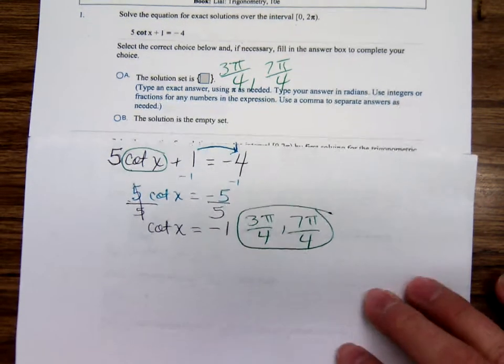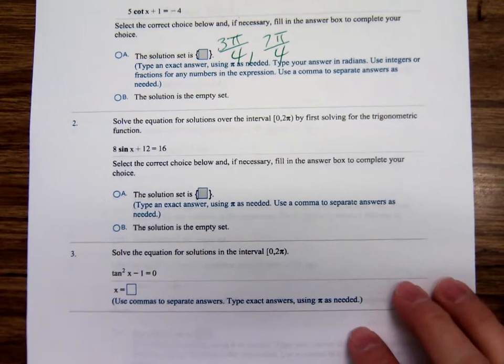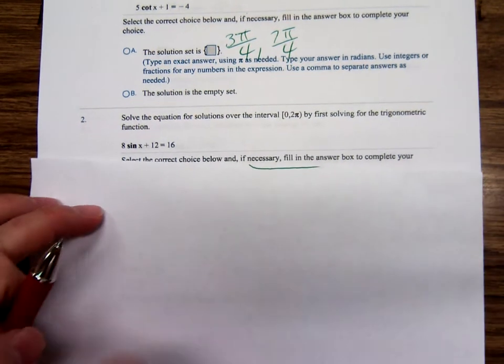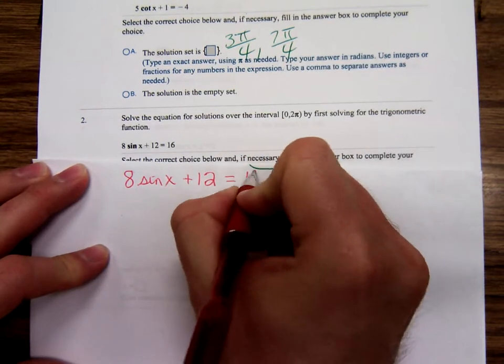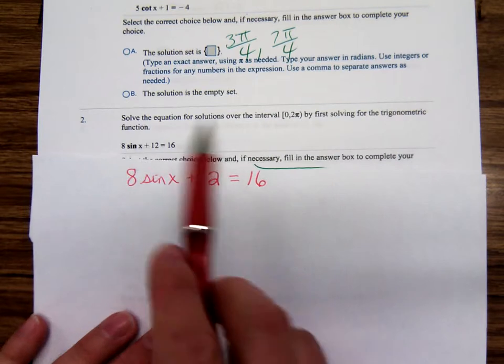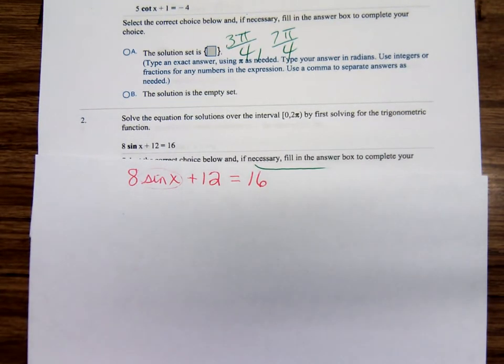Number 2: 8 sine x plus 12 equals 16. This one here, the instructions help you out. It says solve the equation for solutions over the interval 0 to 2π by first solving for the trigonometric function. Get that sine x by itself. How would I go about solving for sine x? Subtract 12.